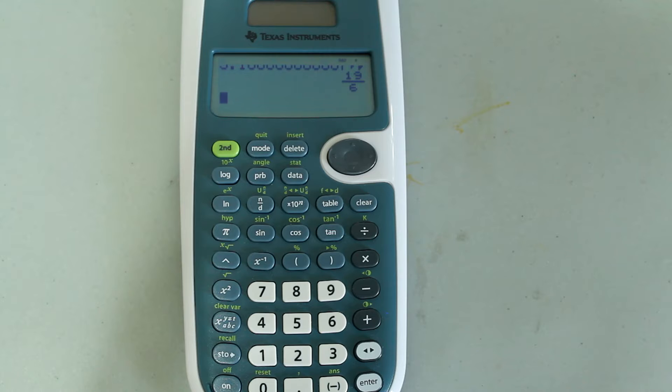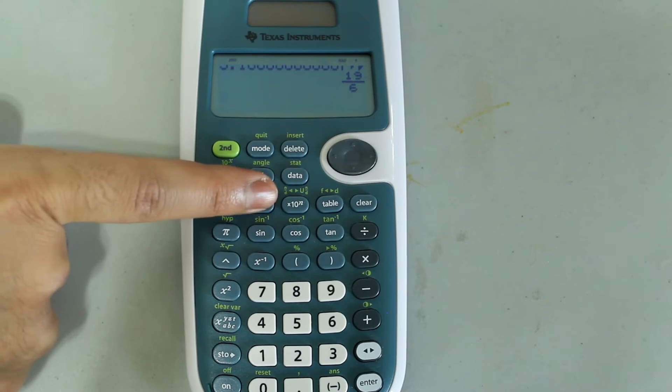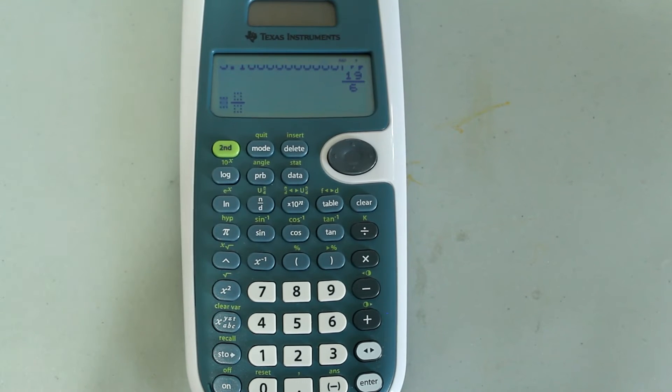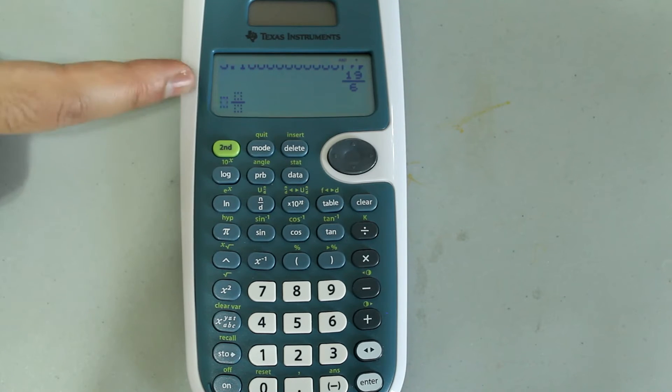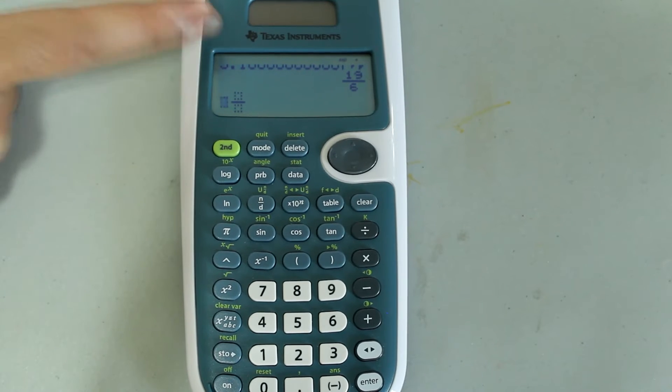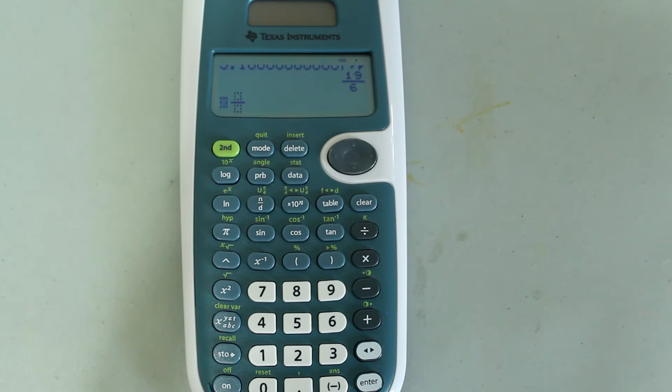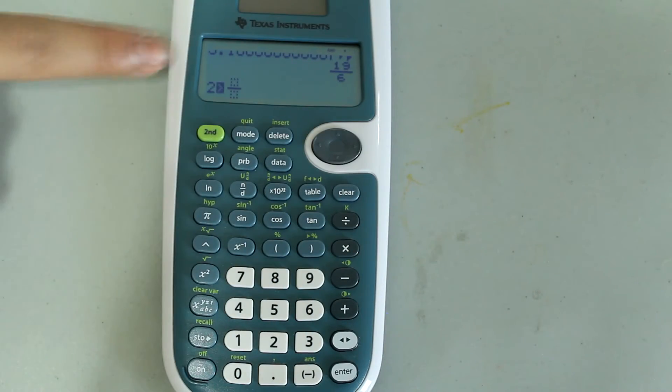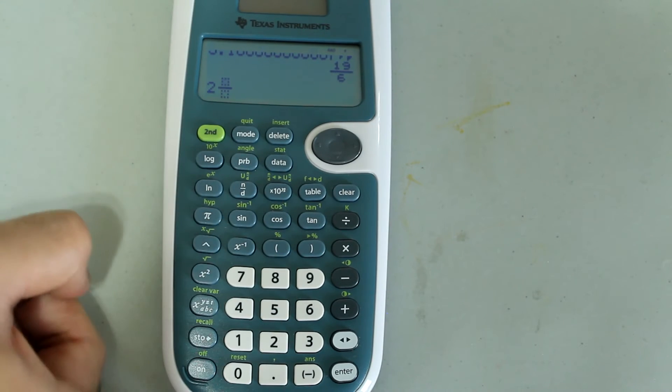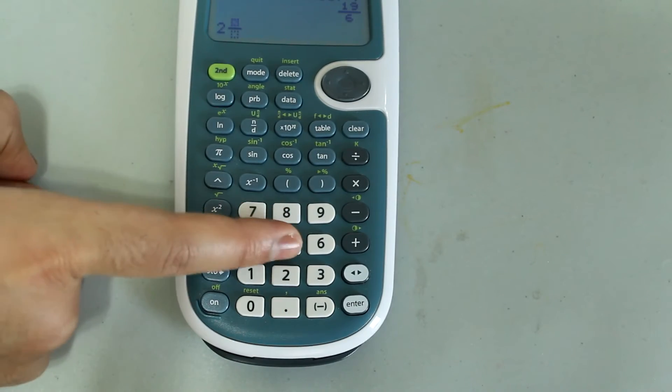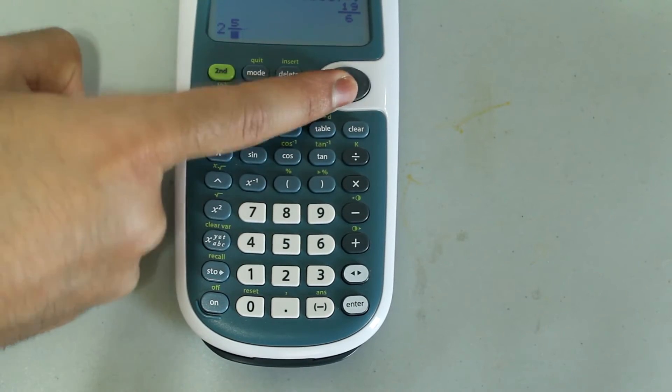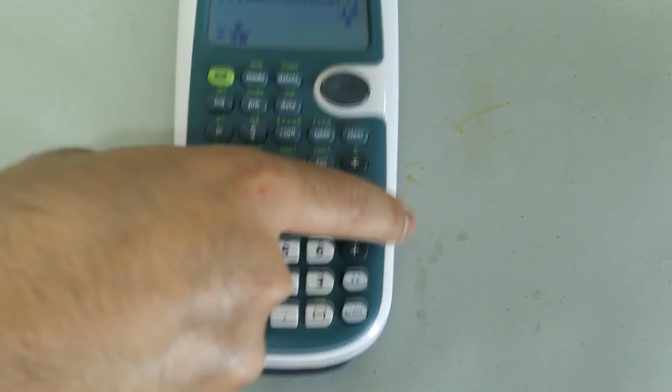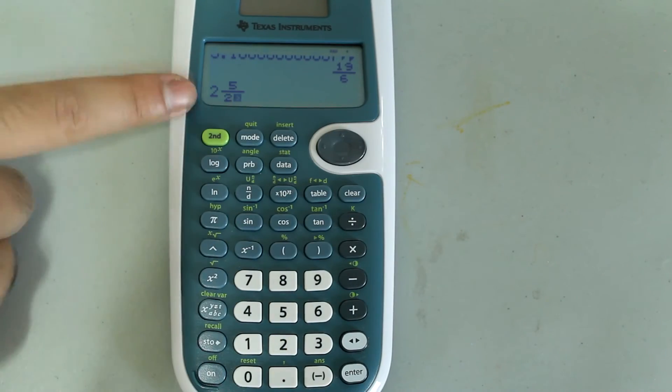If you want to add mixed numbers, press the second button and then the N over D button, and that brings up the mixed number form, where you have space for a whole number and then the fraction. So for example, let's type in 2 and 5 halves. So I'm going to first type in 2, and then I'm going to arrow right to the fraction and type in 5 halves, just like I would for an ordinary fraction. So 5, and then arrow down, and press 2 on the number pad. So I have 2 and 5 halves.